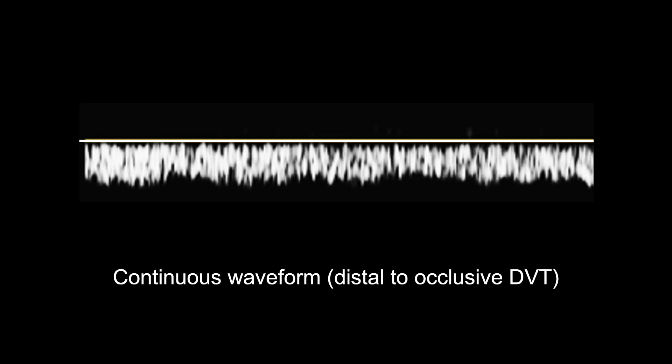Distal to a DVT that is either totally or almost totally occlusive, venous waveforms will be continuous. This means the waveforms will not return to the baseline with inspiration or dip below the baseline with exhalation, but will continue in an unwavering straight line below the baseline.